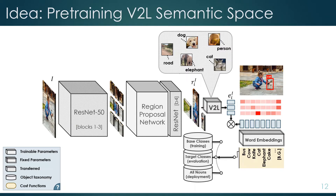The key idea of our work is to pre-train this vision-to-language projection layer as well as its backbone on an open-vocabulary image-caption dataset, so it can learn the appearance of objects like cat for which we don't have any annotation.